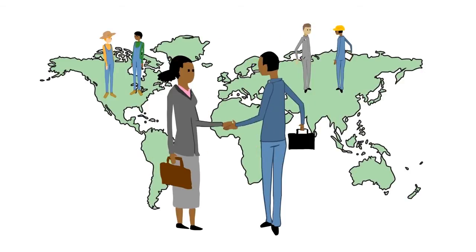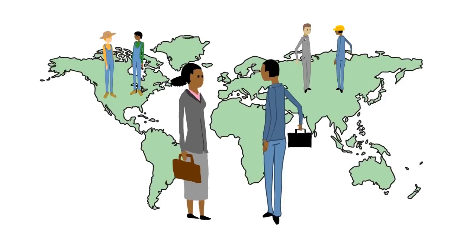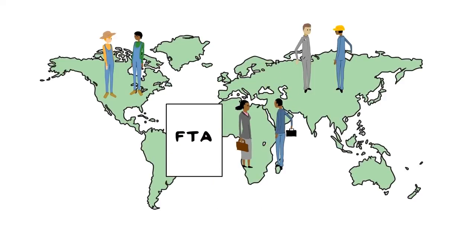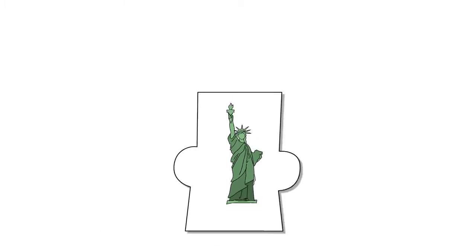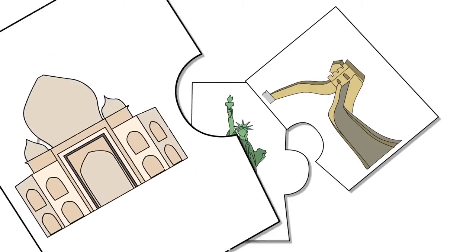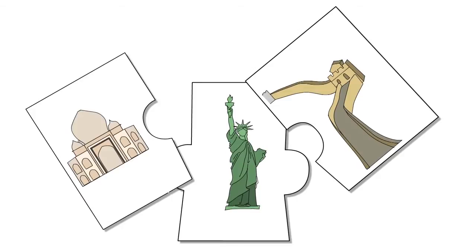Level 2: A Free Trade Area is a block in which countries reduce or remove tariffs on all goods among member nations. An example is the North American Free Trade Agreement between Mexico, USA, and Canada — the NAFTA.